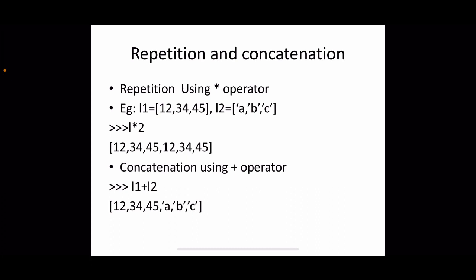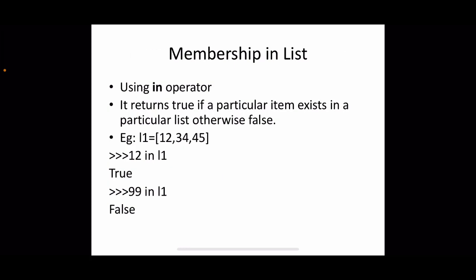The repetition operator uses star: for example, l1 = [12, 34, 45], and l1 * 2 repeats the list two times, creating a new list with the same elements repeated twice. For concatenation, using the plus operator: l1 + l2, where l1 is an integer list and l2 is a string list, combines both into a new list containing all elements.